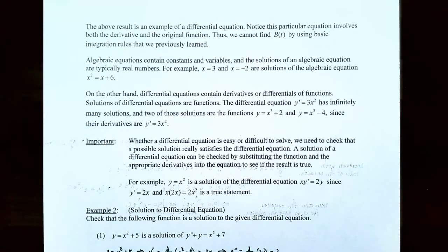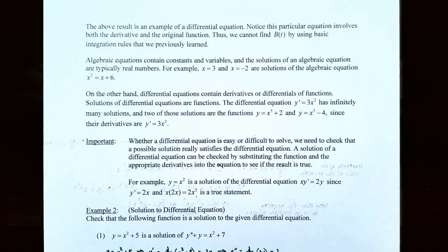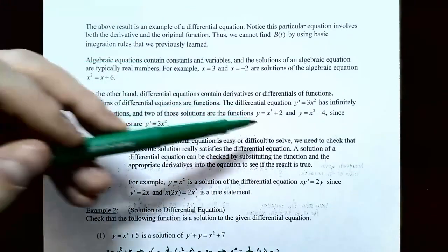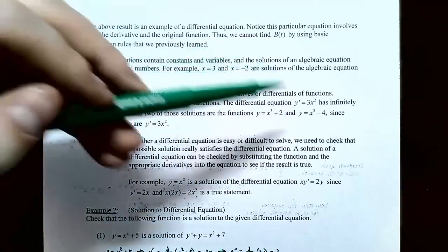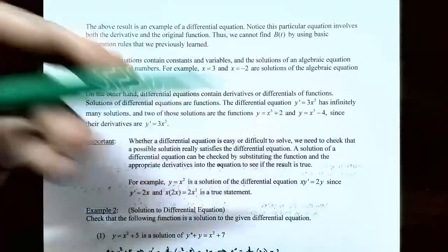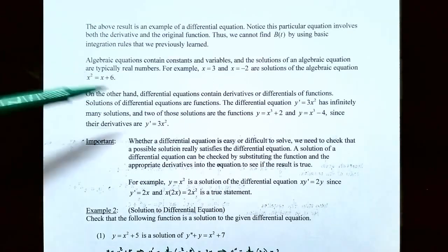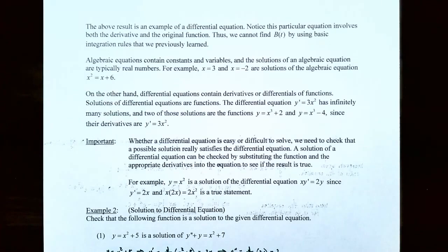Differential equations contain derivatives or differentials of functions, and their solutions are actually functions. For the differential equation y prime equals 3x squared, there are infinitely many solutions, because you can have any function plus a constant. Two examples are y equals x cubed plus 2 and y equals x cubed minus 4, because the derivative of each is 3x squared plus 0. Since we can add any constant whose derivative is zero, there are infinitely many functions that satisfy this differential equation.